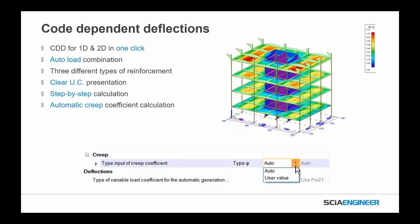For code-dependent deflections, we've also updated this for 1D and 2D members in a single click, with automatic load combinations. We can utilize and understand three different types of reinforcement, with a clear presentation of unity checks — red or green for 1D members, and a unity check gradient on 2D members. It's a step-by-step calculation, wanting to be as far from a black-box nature as possible. The automatic calculation of the creep coefficient is really important — you can set it as an auto calculation throughout slabs and 1D members.